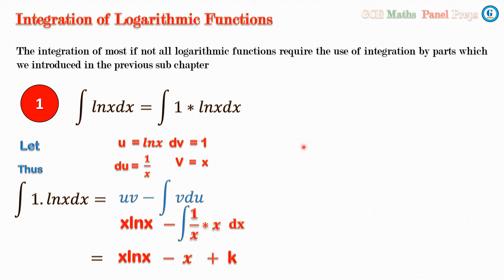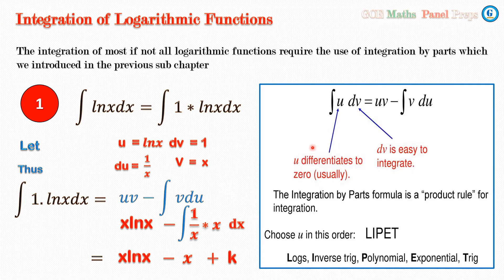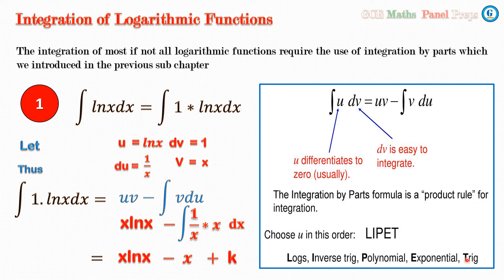The LIATE rule tells us the order of preference for choosing u: L for Logarithmic, I for Inverse trigonometric, A for Algebraic (polynomial), T for Trigonometric, E for Exponential. So if there is a logarithmic function it should preferably be u; if not, check for an inverse trigonometric function; then polynomial; and so on. For example, if we have log and trig together, log should be u. If we have polynomial and trig, polynomial should be u because it comes first.